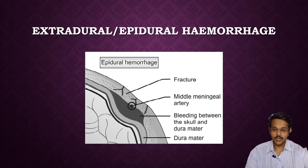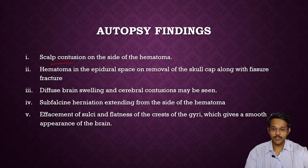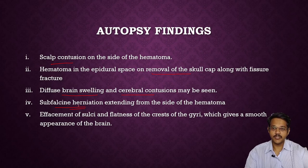On CT scan, the extradural hemorrhage appears as a biconvex lenticular hemorrhage between the skull and the dura, which may be due to arterial bleeding from a fissure fracture. Autopsy findings include scalp contusions with hematoma; on removal of the skull cap, fissure fracture may be seen. Diffuse brain swelling and cerebral contusions may be present, along with herniation — the cerebral brain may herniate from the side of the hematoma.